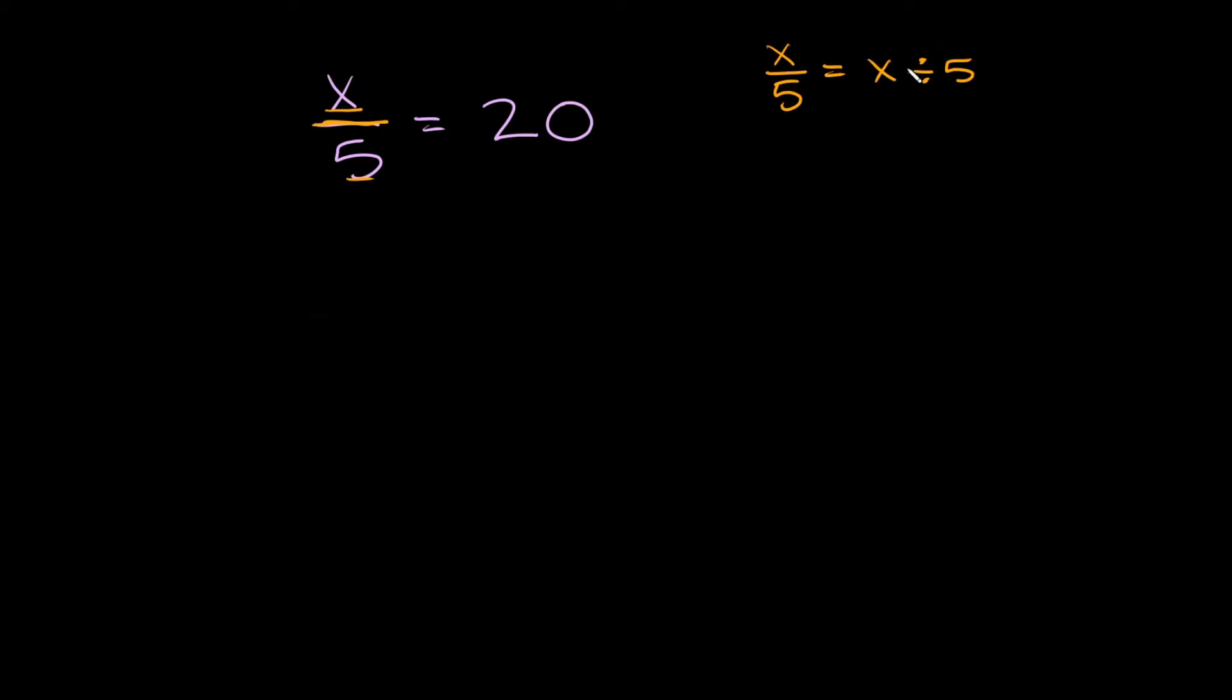So how can I undo this division? Well I could multiply. In order to get rid of this fraction bar and this 5 we need to multiply. But multiply by what? Well whatever we're trying to get rid of. So if we want to get rid of this 5 down here we're going to multiply by 5 on top.